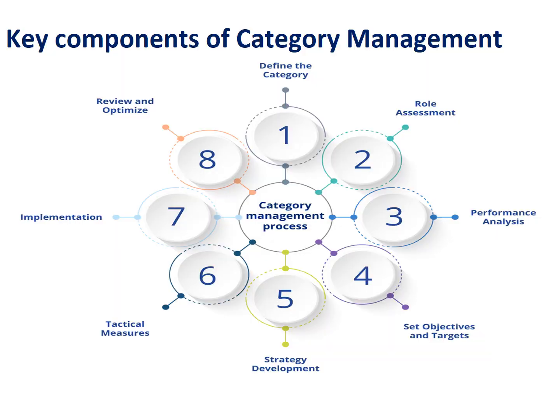After defining Category Management, let's see what its key components are. The first one is defining the categories, then defining the role of each category, developing a strategic sourcing plan for each category, leveraging data analytics tools and techniques, setting objectives and targets for each category, developing key performance indicators for each category, implementing the category management approach, and then reviewing and optimizing all the strategies to make them more effective.